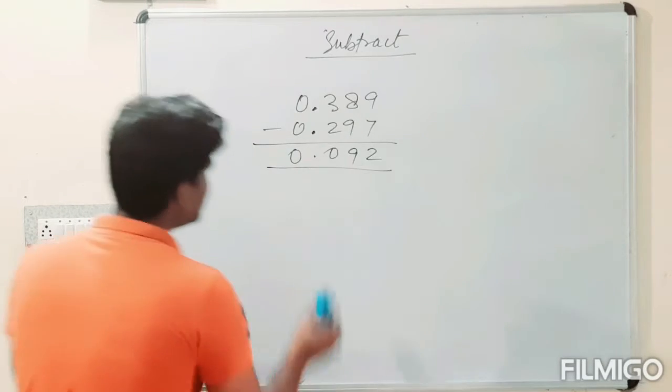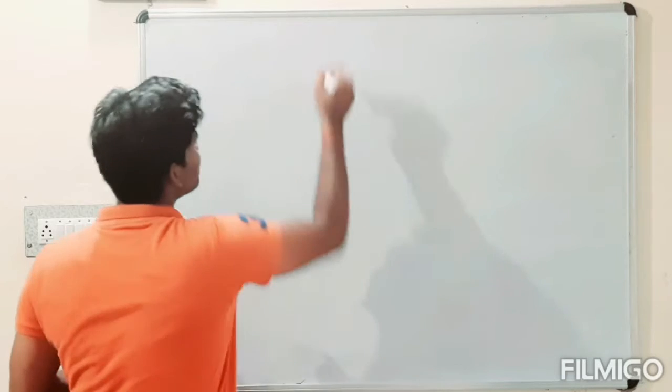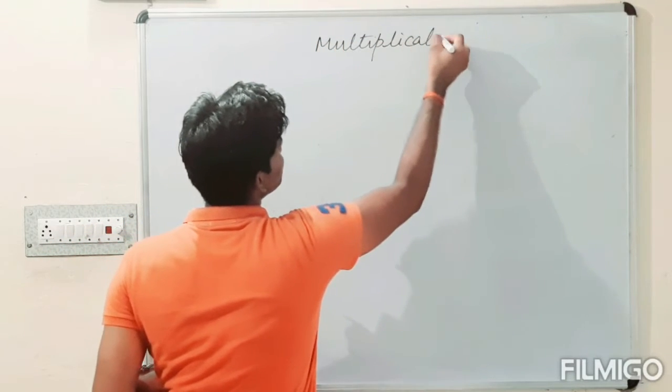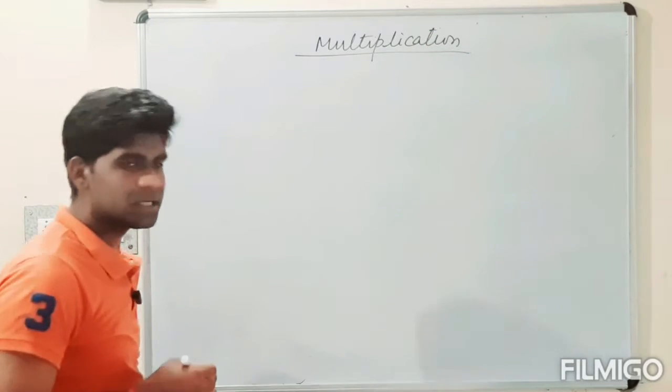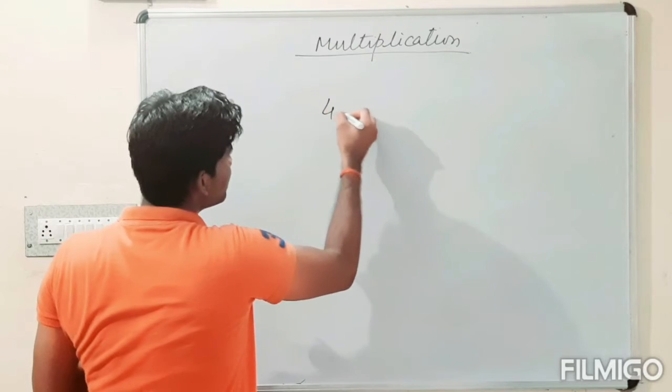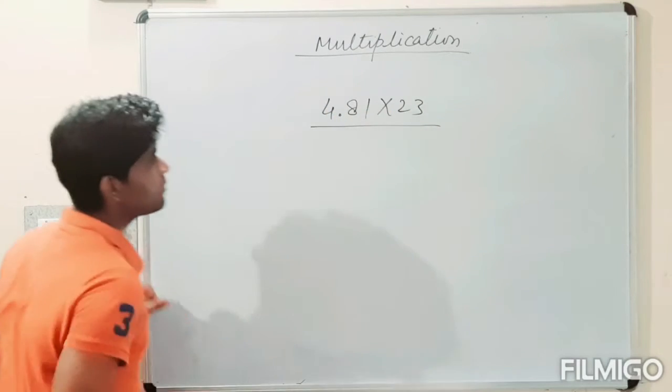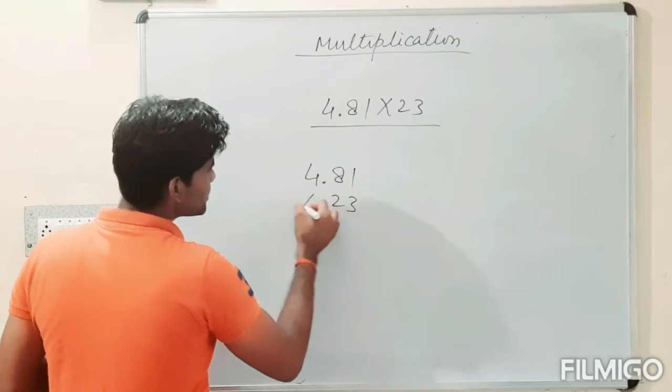Now, how will you multiply the decimals? Simply let's take an example. 4.81 multiplied by 23. It is an example. We have 4.81 by simply multiplication terms.